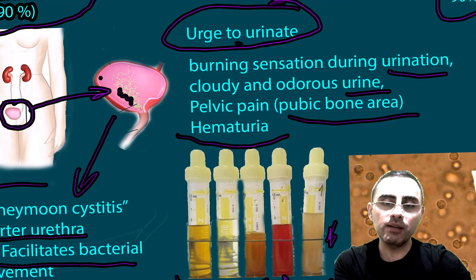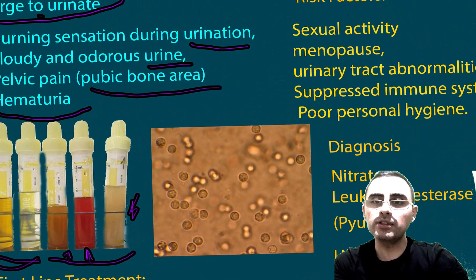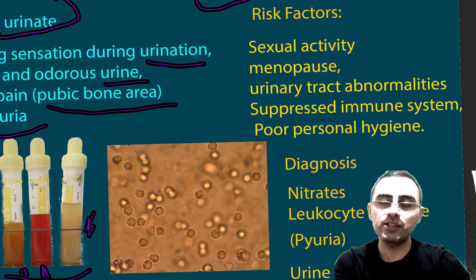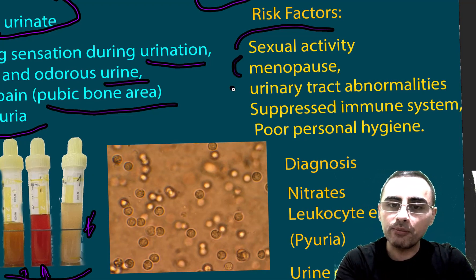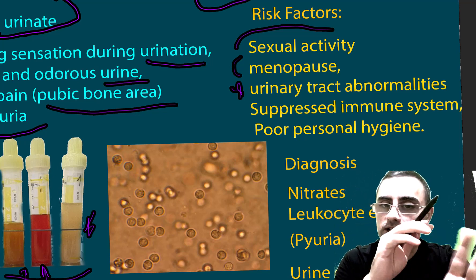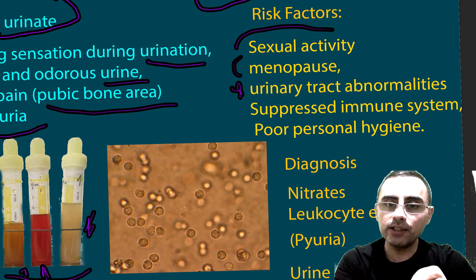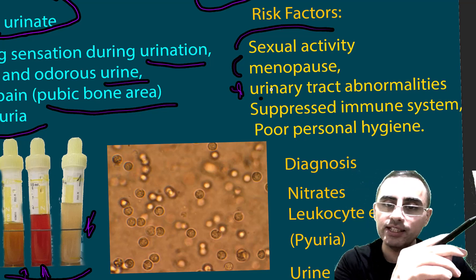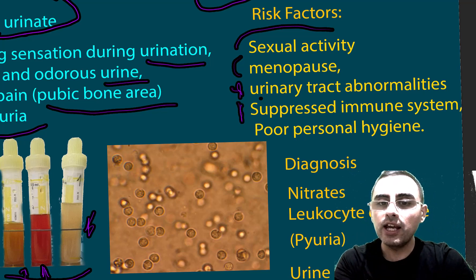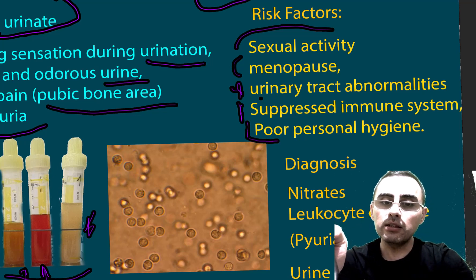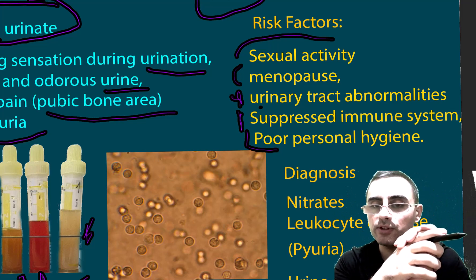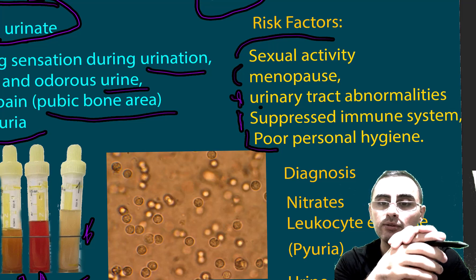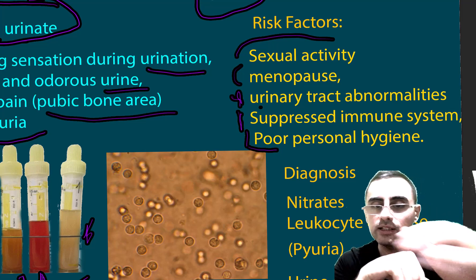Risk factors include sexual activity, menopause, and urinary tract abnormalities — which should be suspected especially in men with recurrent UTIs. A suppressed immune system is another risk factor, as is poor personal hygiene, since bacteria can travel from the anus to the urethra and facilitate infection.